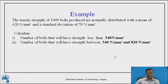With this data, what we need to know is how many bolts out of 1000 will have strength less than 540 Newton per mm². Also, we need to find the number of bolts that will have strength between 540 Newton and 820 Newton per mm². This analysis helps designers and users determine which bolts are suitable for particular applications.